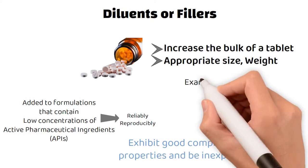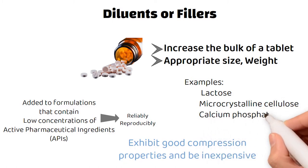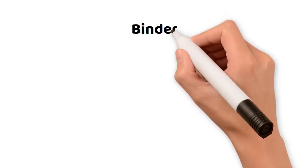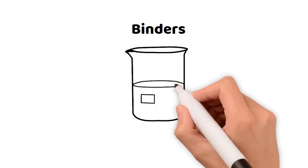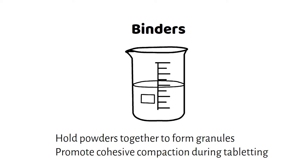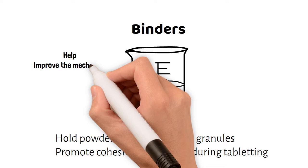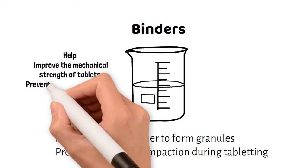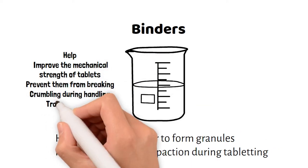Examples of diluents include lactose, microcrystalline cellulose, calcium phosphate, and mannitol. Secondly, we have binders. These are used to hold powders together to form granules, or to promote cohesive compaction during tableting. They help to improve the mechanical strength of tablets and prevent them from breaking or crumbling during handling or transportation.